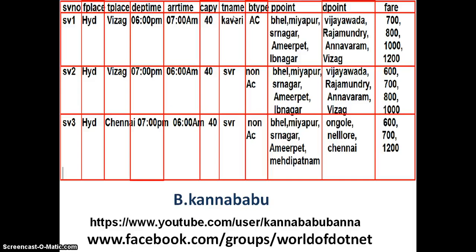The bus details include travel agency name, bus type — whether it is AC or non-AC — and pickup points. Pickup points are nothing but the locations where the customer can board the bus. For example, the bus travelling from Hyderabad to Vizag has pickup points like BHEL, Miyapur, SR Nagar, Ameerpet, or LB Nagar. Similarly, destination points define where the customer travels to. For example, from Hyderabad to Vijayawada the fare is 700, or to Rajamundry, Amaravathi, or Vizag. The customer can also book from Vijayawada to Rajamundry, Amaravathi, or Vizag.